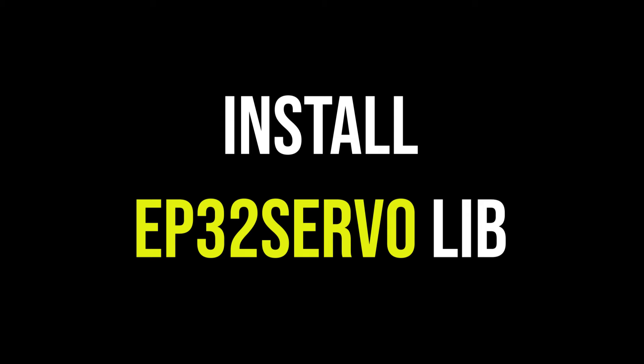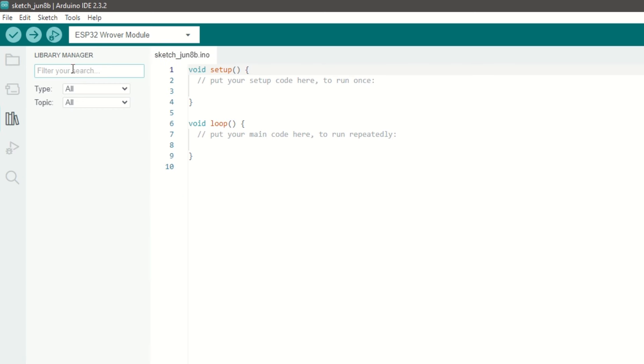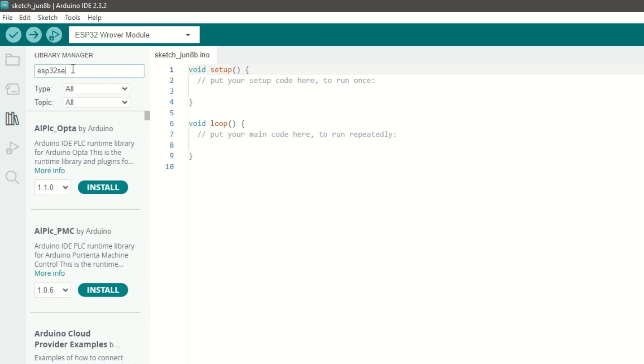Now we need to install ESP32 servo library for servo motor control. Go to Tools and then Manage Library. Search for ESP32 servo and install it.